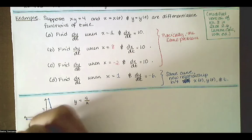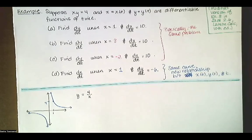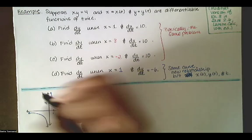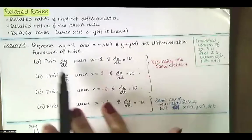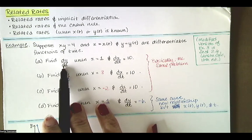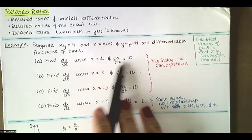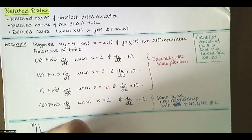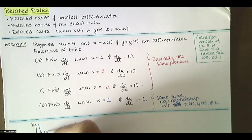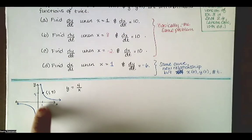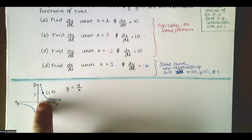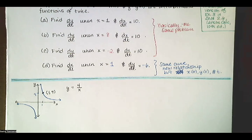The problem statement says find dy/dt when x equals 1 and dx/dt equals 10. So we're at this location. When x equals 1, y equals 4 divided by 1, which is just 4. We're at this location and we know that as t increases, x is increasing by 10 units per unit time — 10 units in the x direction for one unit change in time, like 10 units per second.